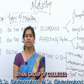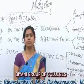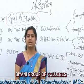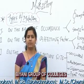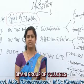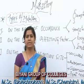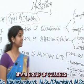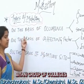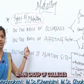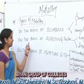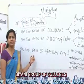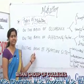There are different types of mutation, divided into different categories. First, on the basis of their occurrence. Second, on the basis of their affecting factors. Third, on the basis of mutation site.